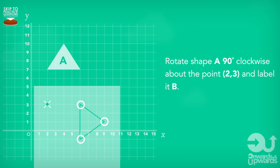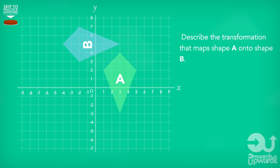Moving on to type two questions, an example could be: describe the transformation that maps shape A onto shape B.